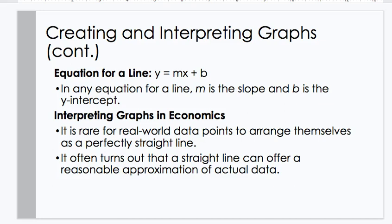Creating and interpreting graphs continued. If we have an equation for a line, that's Y equals MX plus B. In any equation for a line, M is the slope and B is the Y-intercept. Interpreting graphs in economics. It is rare for real-world data points to arrange themselves as perfectly as a straight line. It often turns out that a straight line can offer a reasonable approximation of actual data.